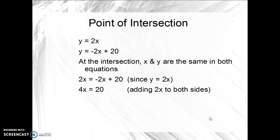We add 2x to both sides. We get 4x equals 20. x then must be equal to 5. And y is 2 times x or 2 times 5, 10.